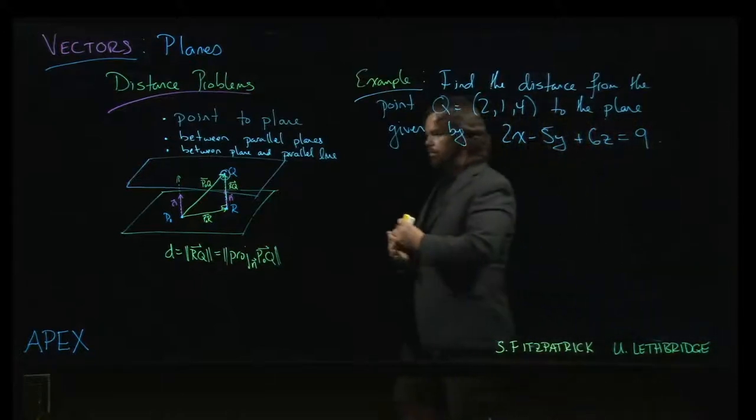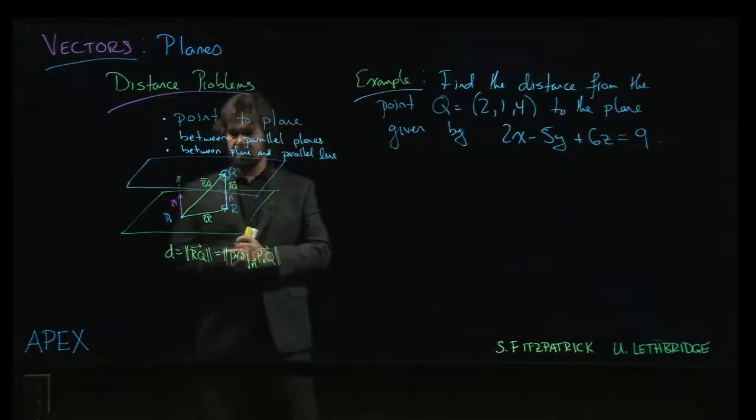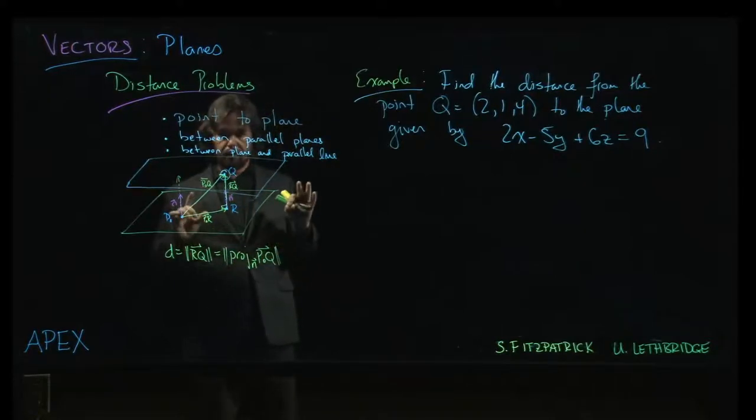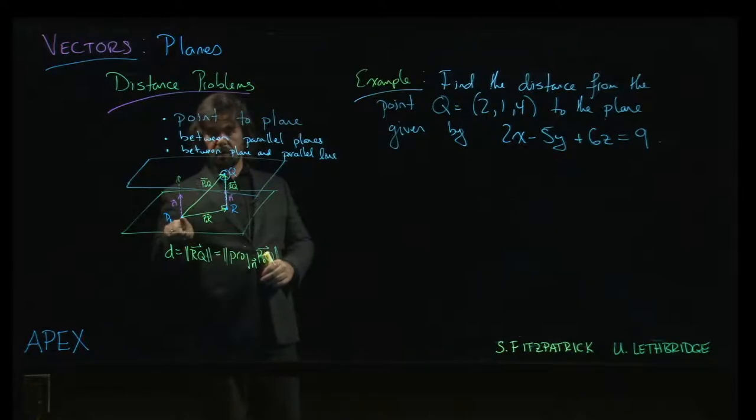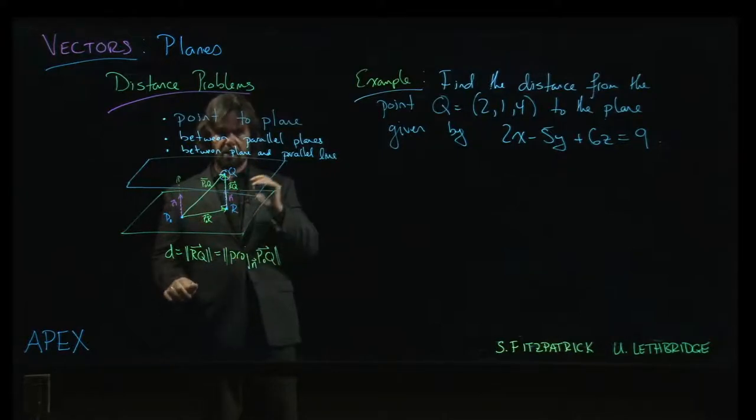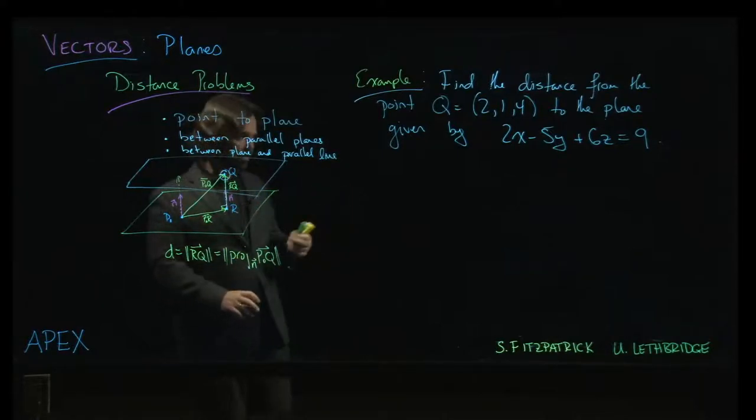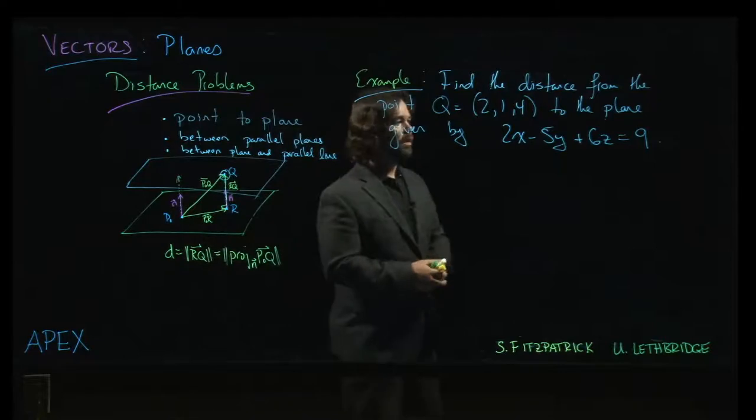All right, so let's tackle one of these distance problems. In the setup we discussed that from the plane we need a point on the plane and a normal vector, and then we can calculate the projection, find the magnitude of the projection, and we'll be in business.